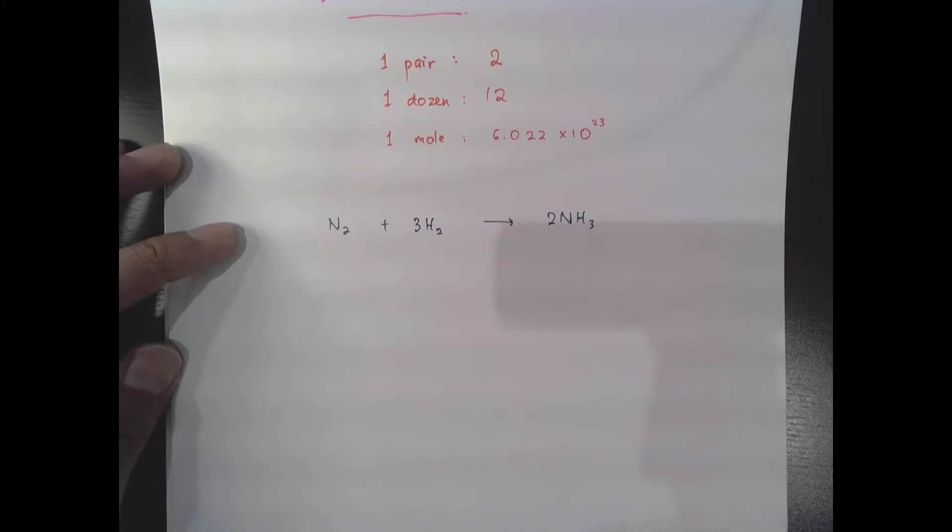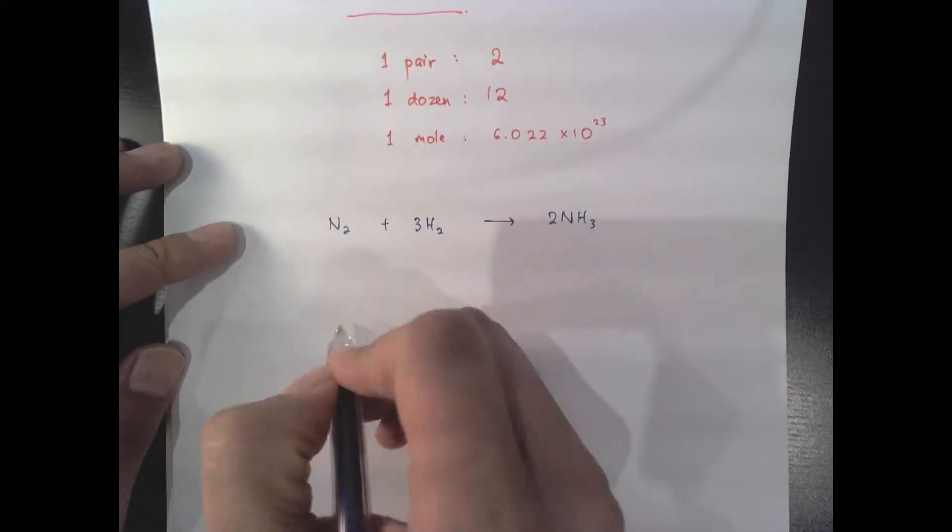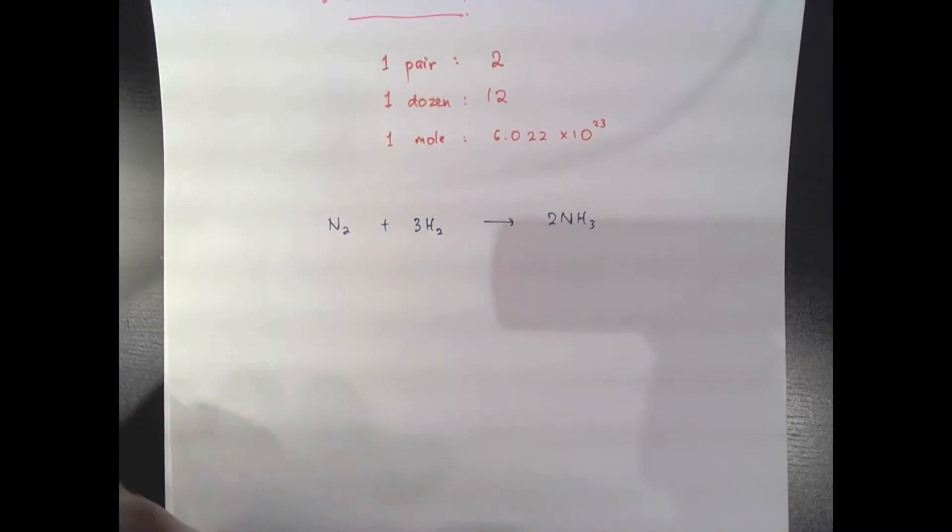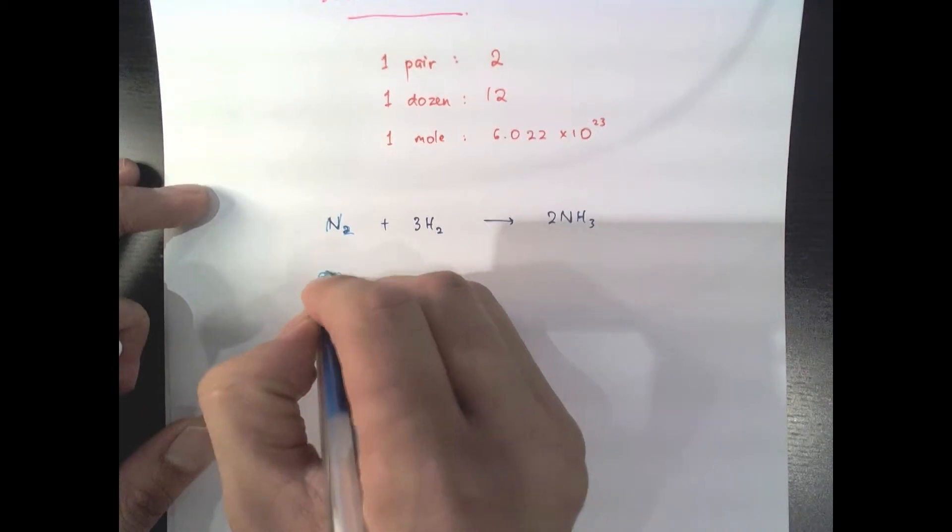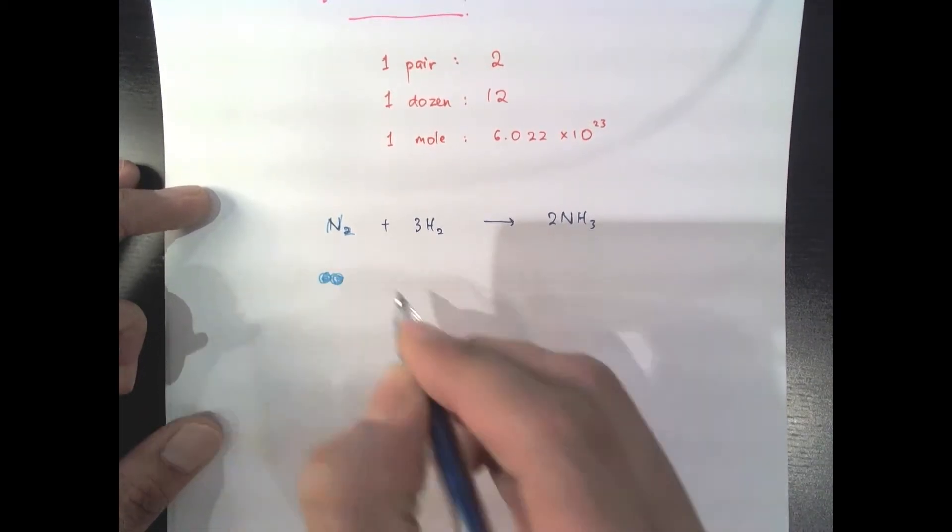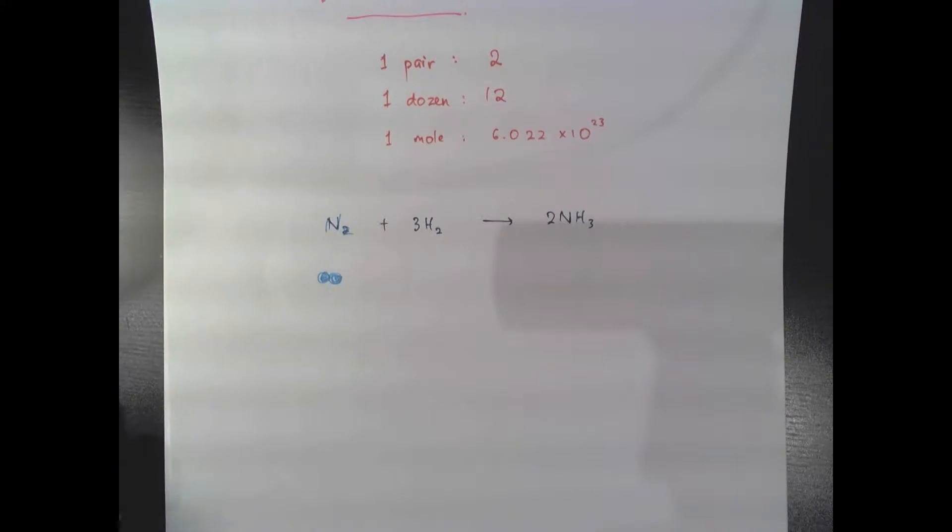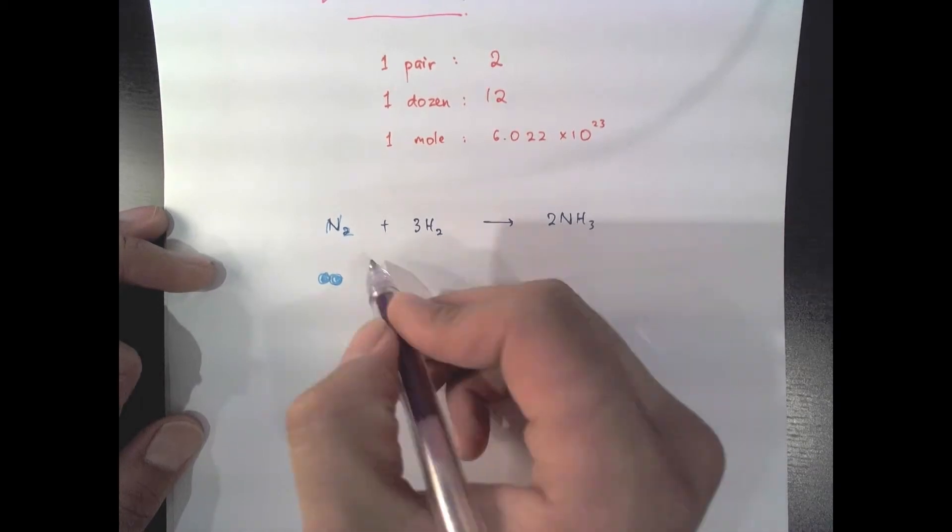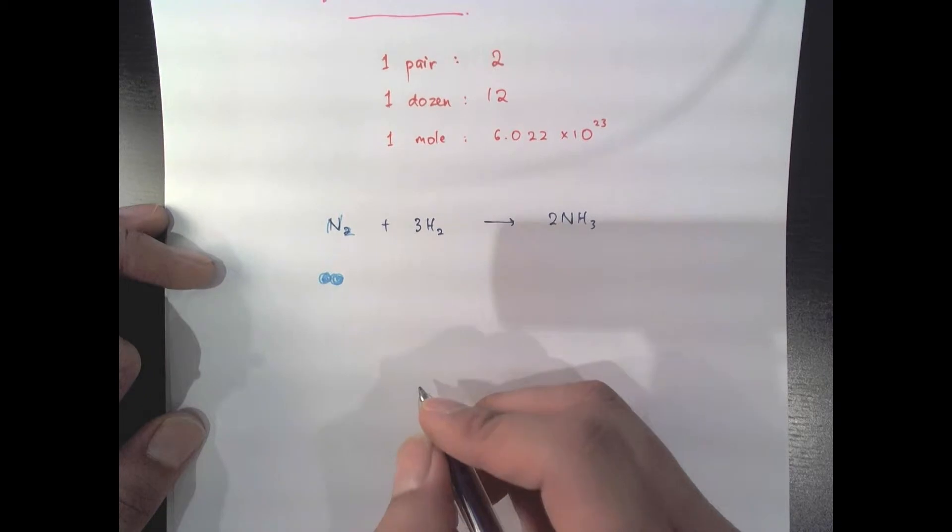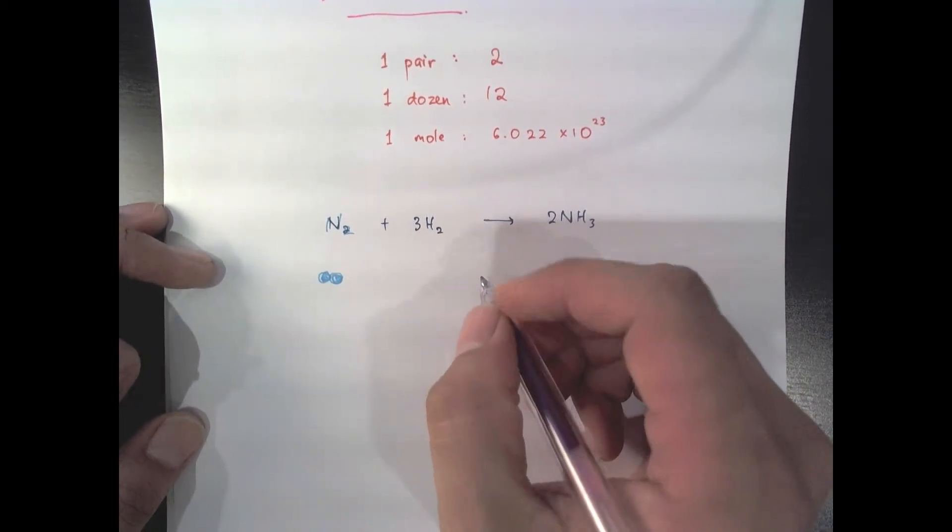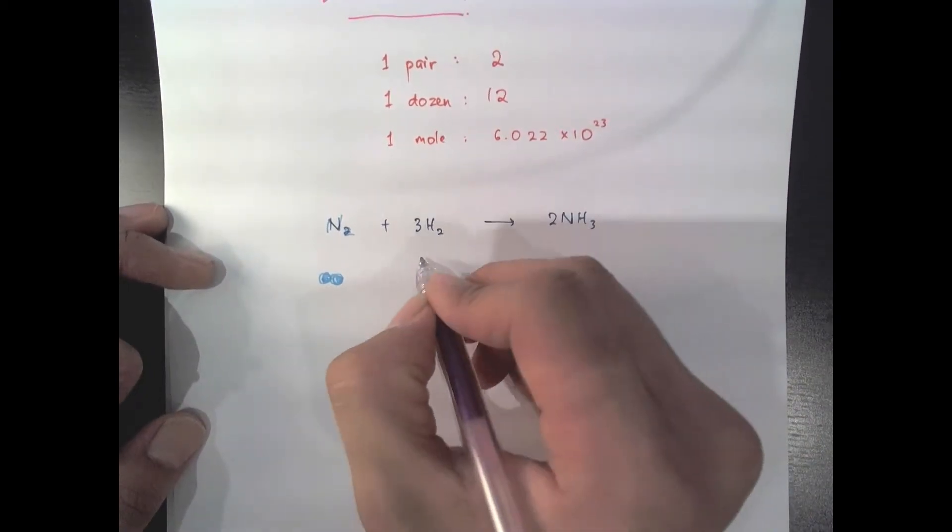So basically what this equation says is that if I have a molecule of nitrogen, let's make that blue. So here's my nitrogen. A molecule of nitrogen consists of two nitrogen atoms covalently bonded together. If you're rusty on covalent bonding or not sure why nitrogen has to be diatomic and can't exist alone, go back and take a look at my videos on covalent bonding.